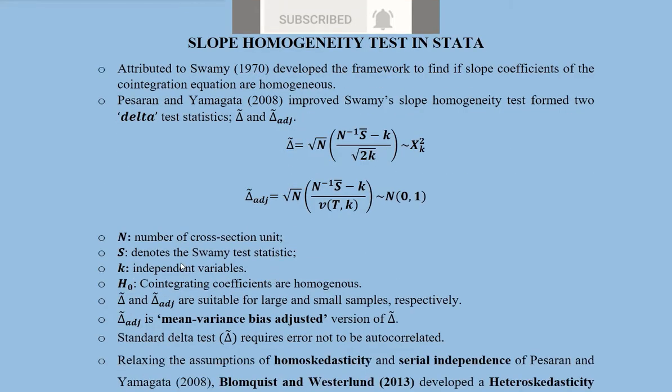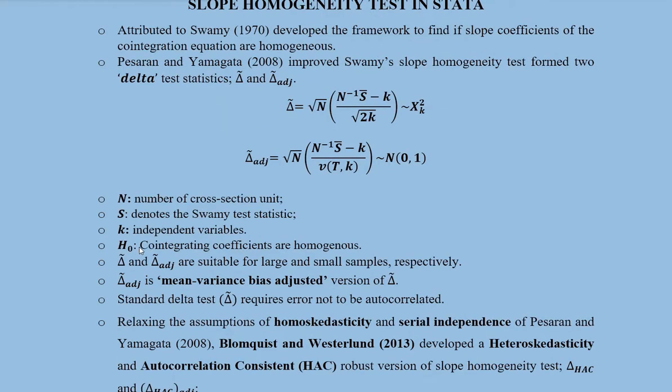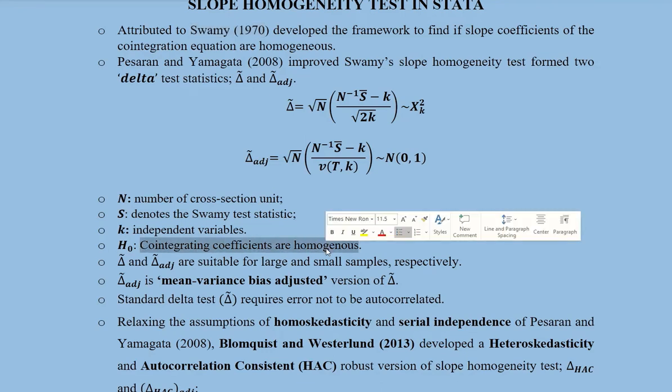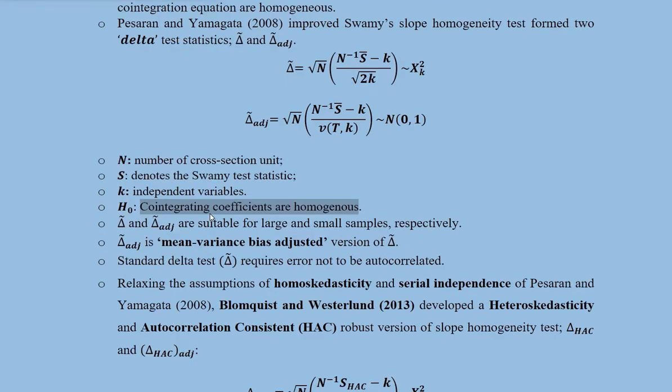Here N is the number of cross section units. S is the Swamy test statistic. K is the number of independent variables. The null hypothesis is that cointegration coefficients are homogeneous. If they are homogeneous, the rejection of null hypothesis will lead to the heterogeneous panel.